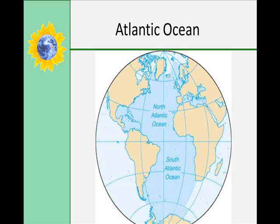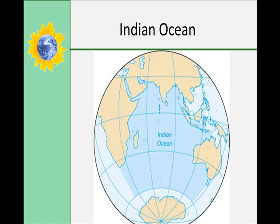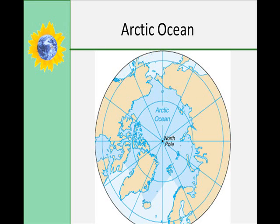The Atlantic is considered a relatively narrow ocean, however it is expanding. The Indian Ocean is smaller than the Atlantic Ocean and is located mostly in the Southern Hemisphere. The Arctic is roughly 7% of the size of the Pacific Ocean basin, and it is the shallowest of the four oceans.